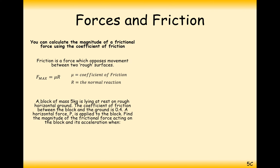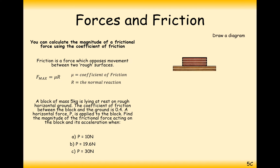Let's look at a question. A block of mass 5 kilograms is lying at rest on rough horizontal ground. The coefficient of friction between the block and the ground is 0.4. A horizontal force P is applied to the block. We need to find the frictional force and acceleration when P is 10 N, 19.6 N, or 30 N. We have a block on a table with a 5 kilogram weight.